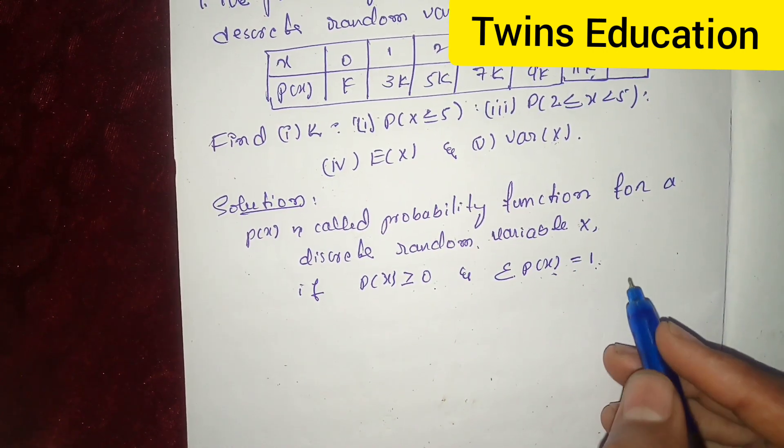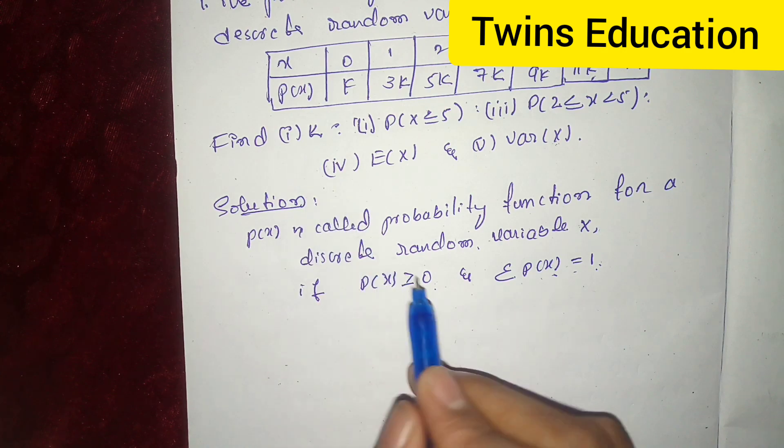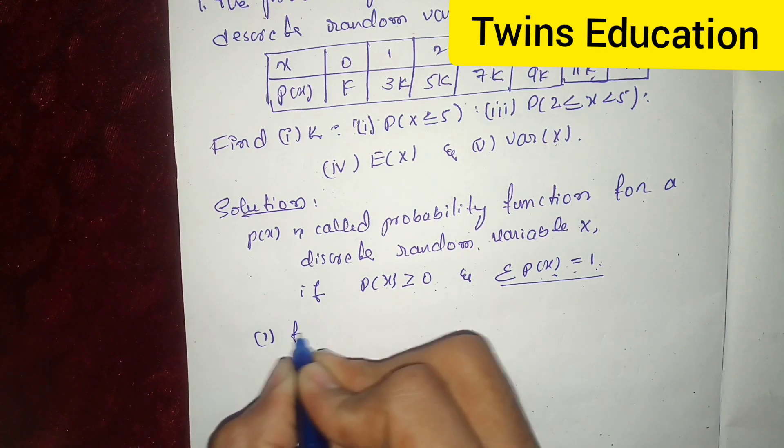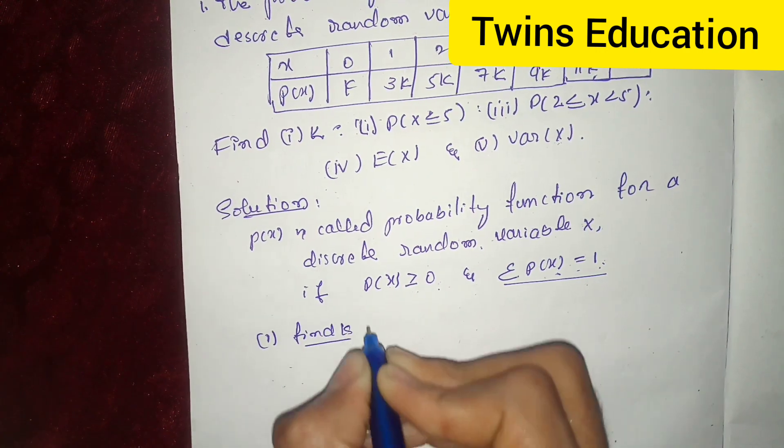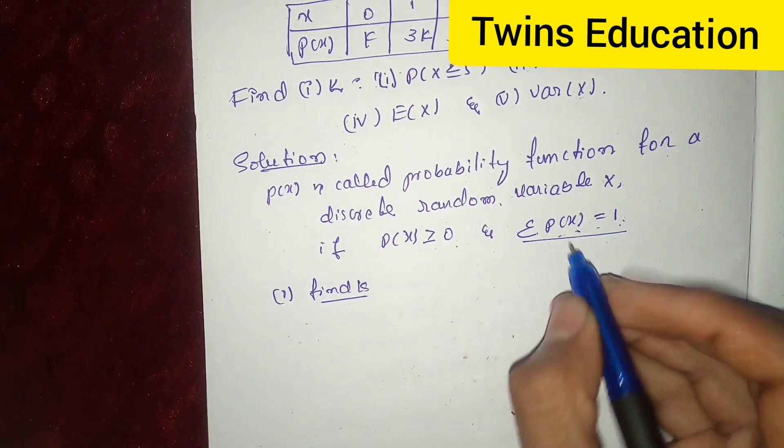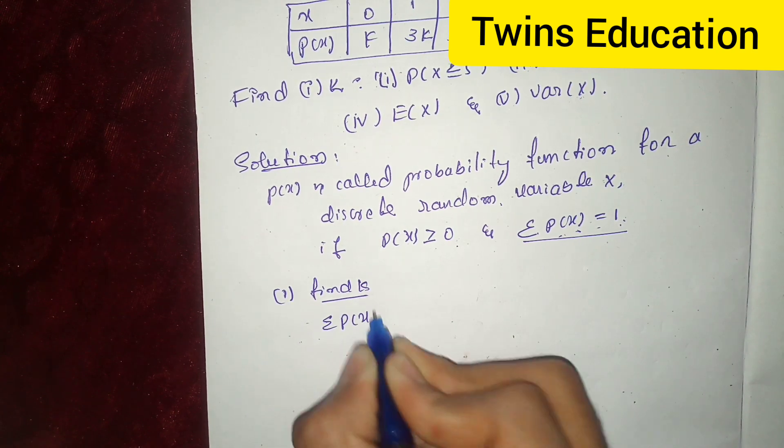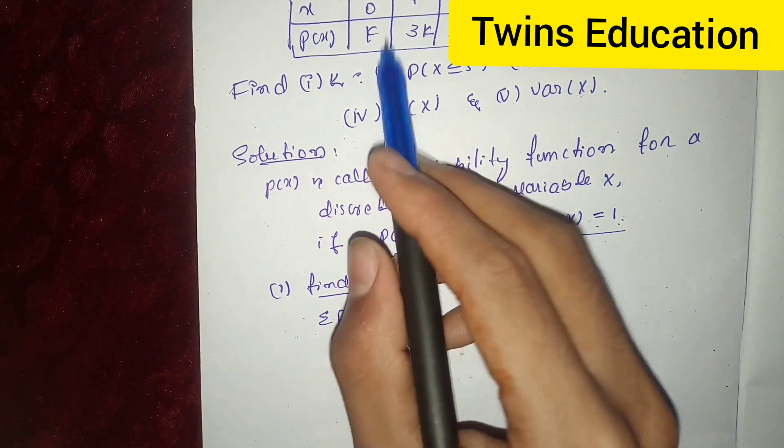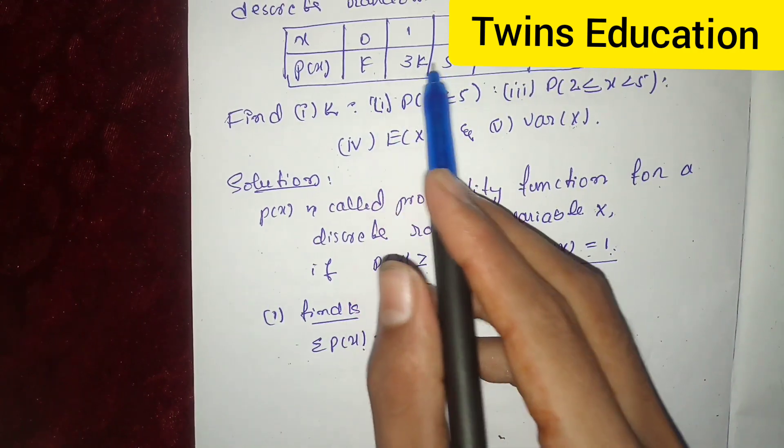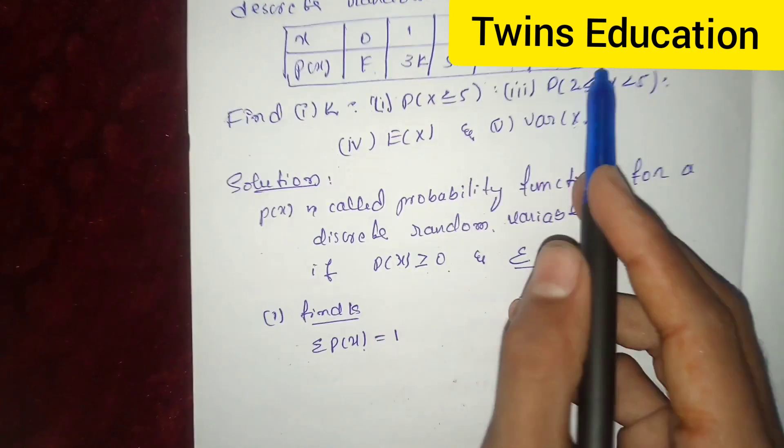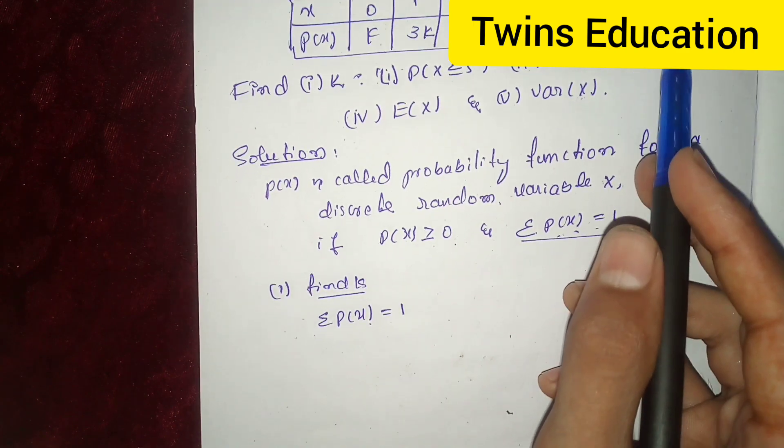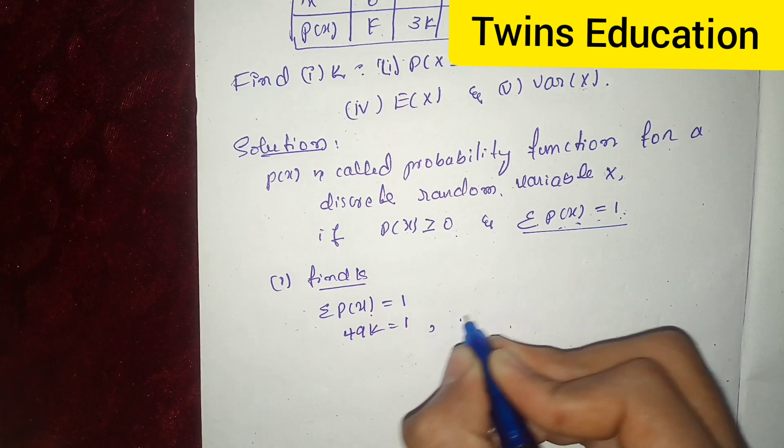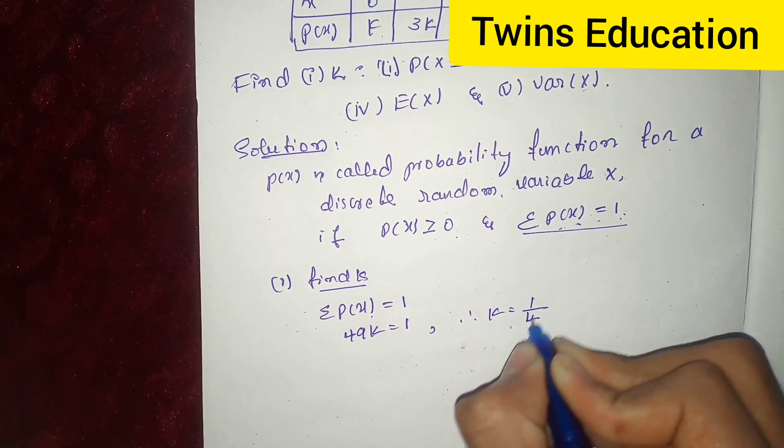Let's first find k. How to find k? We have this condition. First condition, find k. Now, we have this condition: summation of p of x is equal to 1. Now, what is summation of p of x? Add k, 3k, 5k, 7k, 9k, 11k and 13k. We will get 49k which is equal to 1, where value of k is 1 by 49.